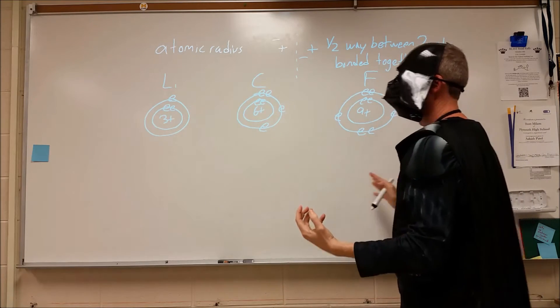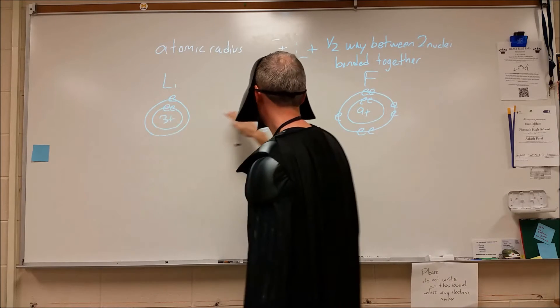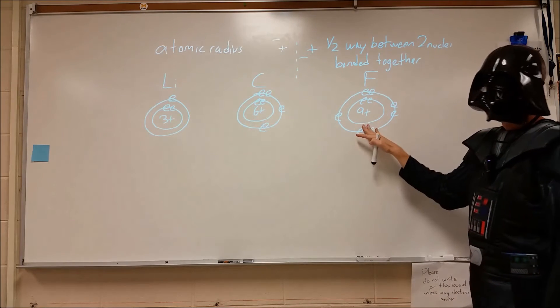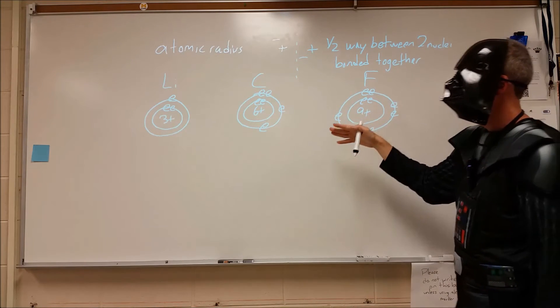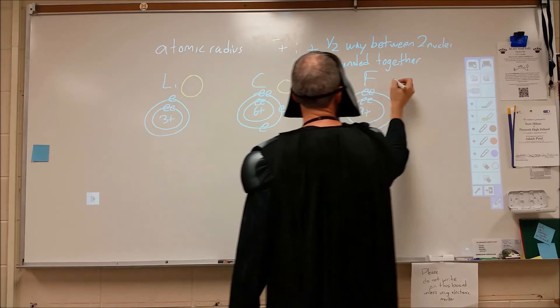So here we have a weaker pull on these three electrons than we do over here than we do over here. And that makes sense given that our size tends to go from large to medium to very small.